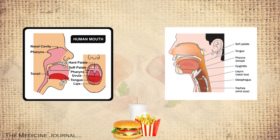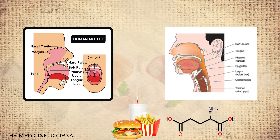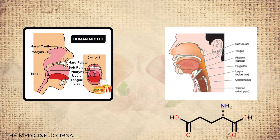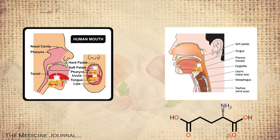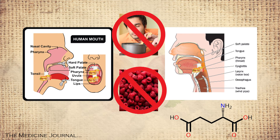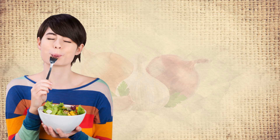Aftertaste is thought to be the remaining chemicals from food or drink still affecting the gustatory cells on the tongue, back of throat, epiglottis, and the upper part of your esophagus, after the other factors of overall taste — like smell and texture — are no longer affecting the brain.